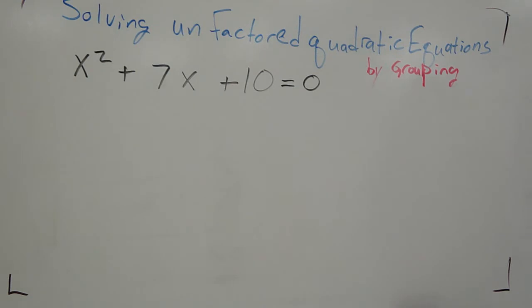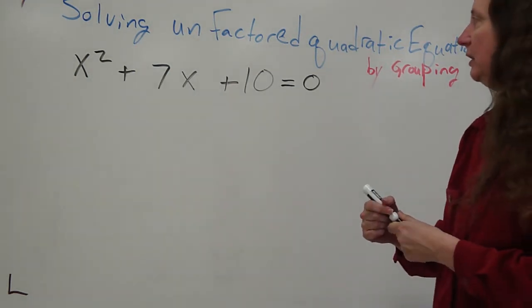Solving unfactored quadratic equations by grouping. x squared plus 7x plus 10 equals 0.